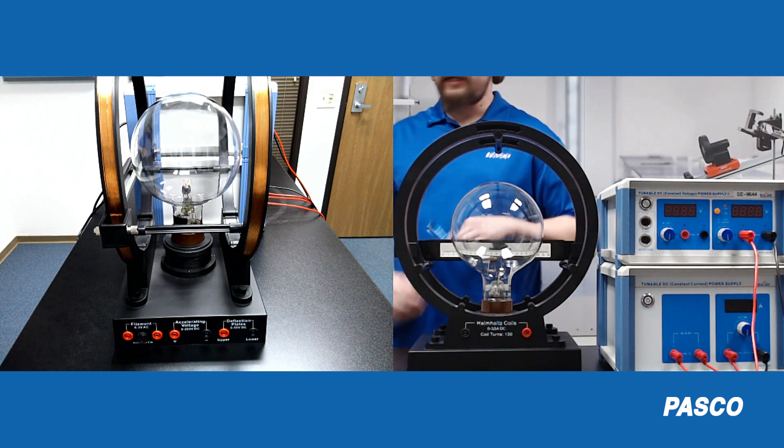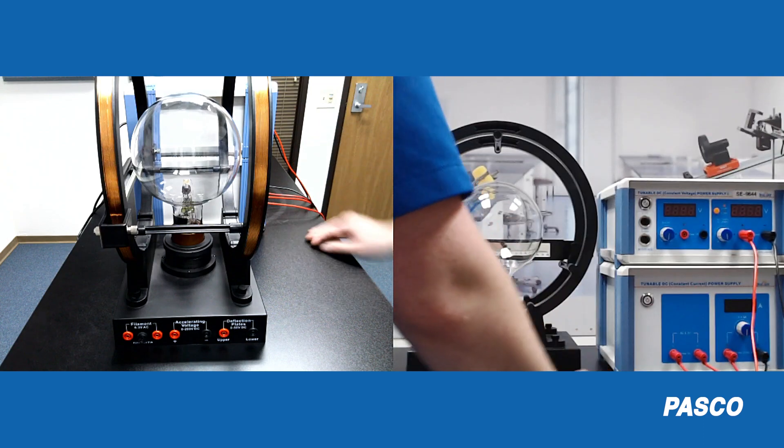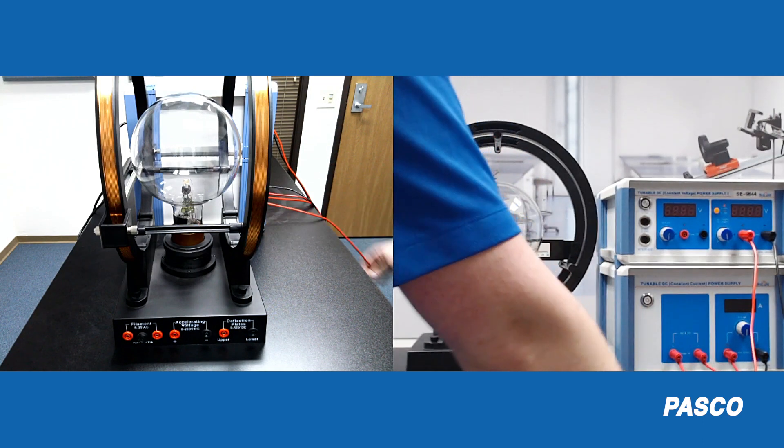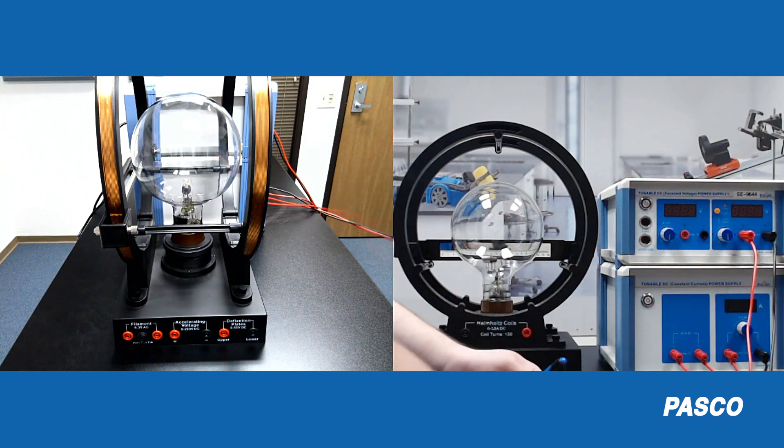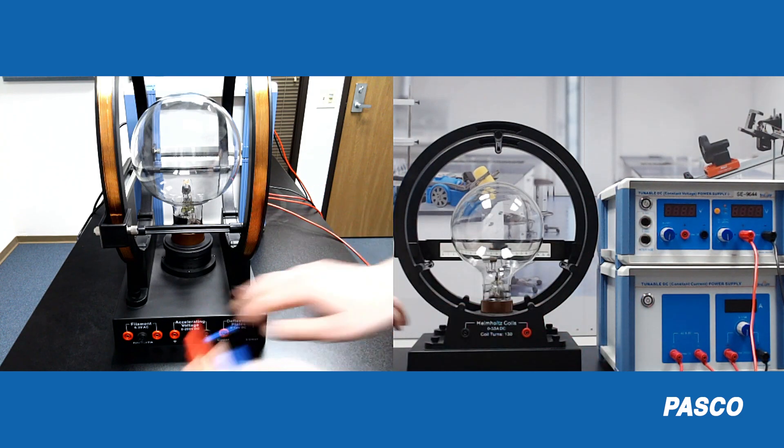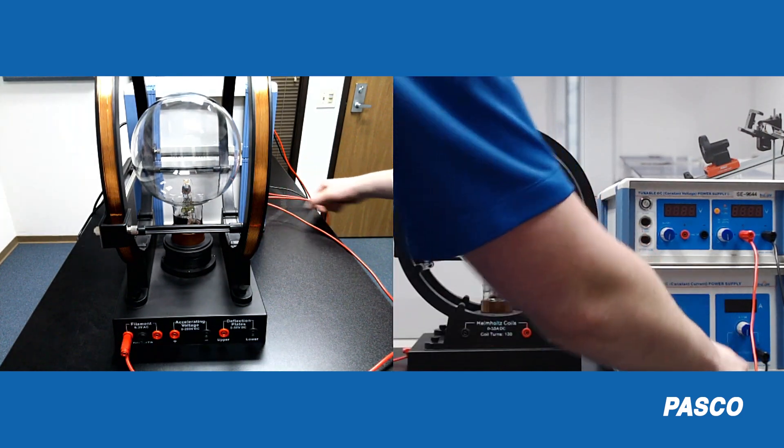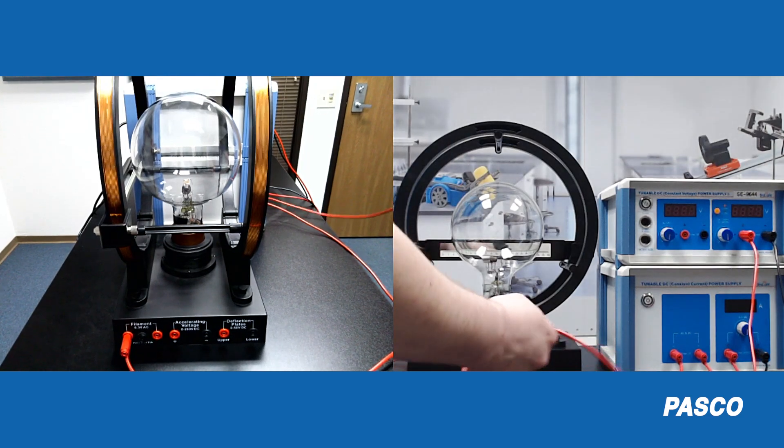So to start off, let's connect everything. We have both our power supplies right here. So first we're going to start with the 6.3 volts alternating current. We're going to plug that into the filament input on the Helmholtz coil base. We'll take the other one and do the exact same.